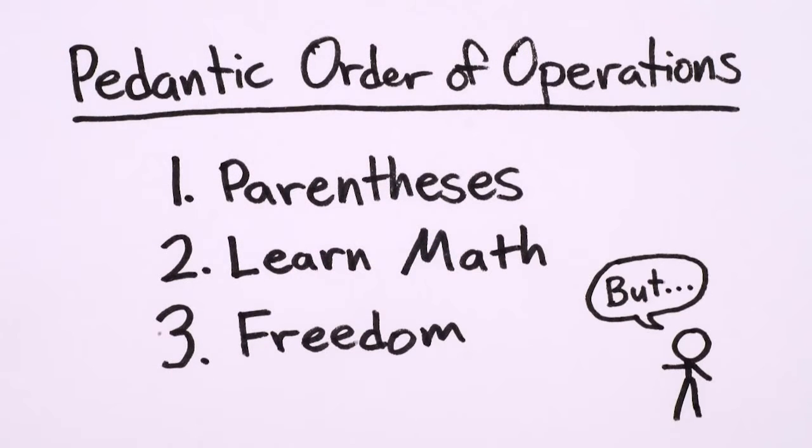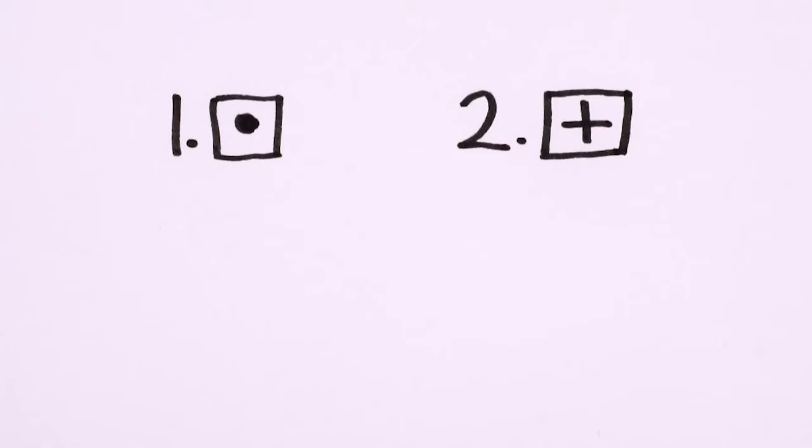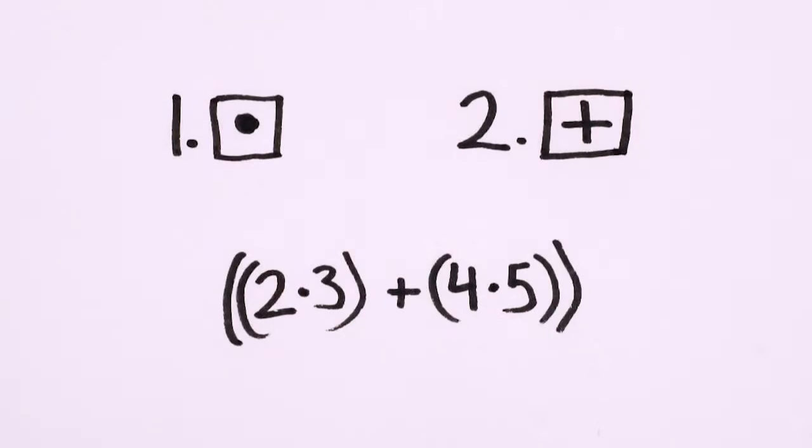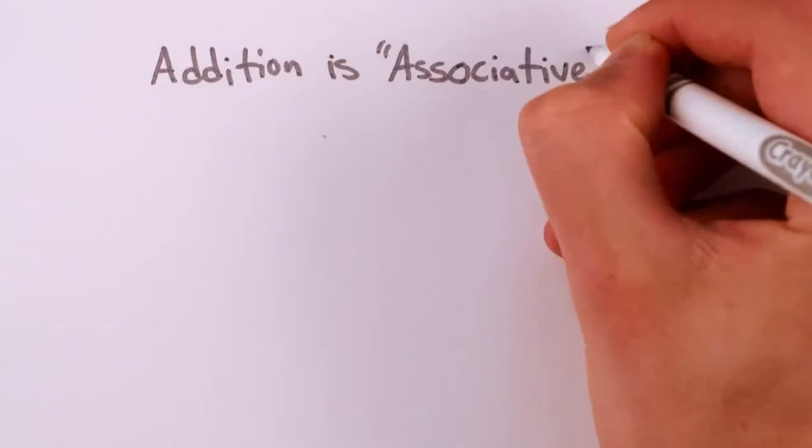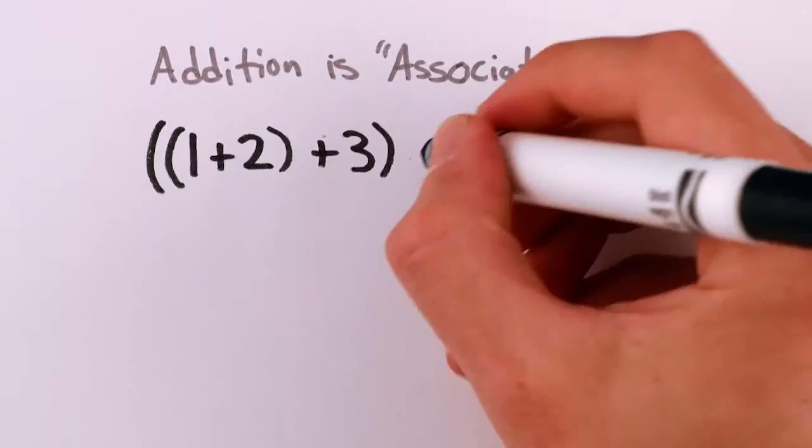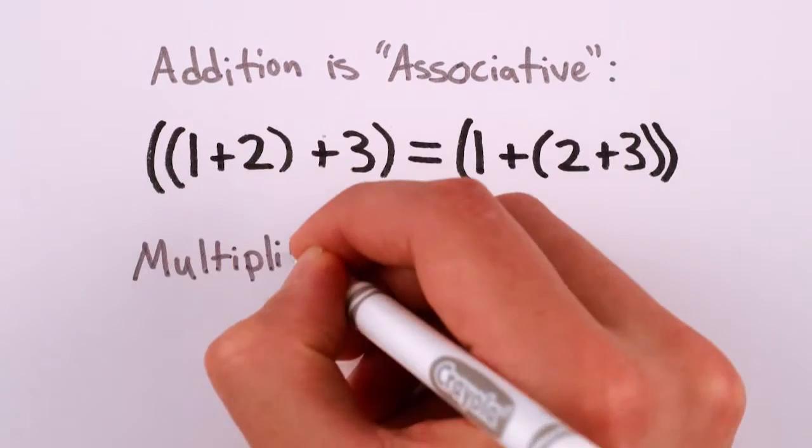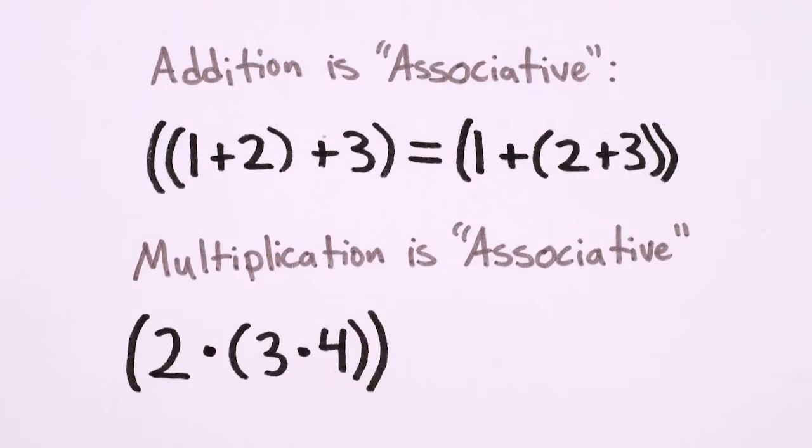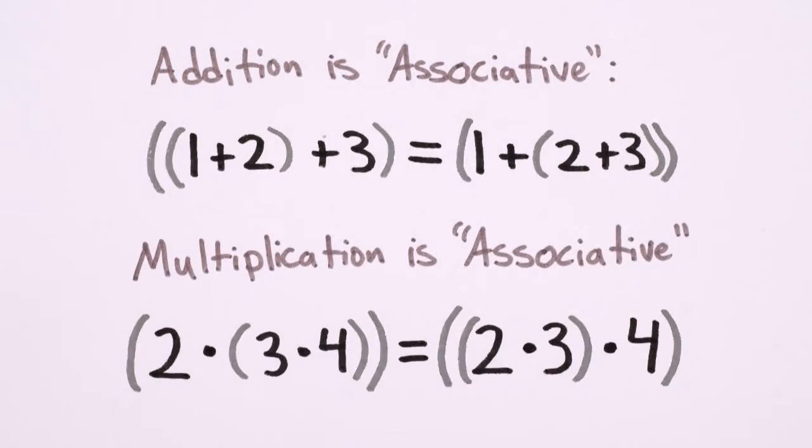That's not to say that we don't have a conventional order of operations in mathematics. I mean, deciding that we evaluate multiplication before addition allows us to get rid of lots and lots of redundant parentheses. And noticing that 1 plus 2 plus 3 equals 1 plus 2 plus 3, and 2 times 3 times 4 equals 2 times 3 times 4 removes a ton more.